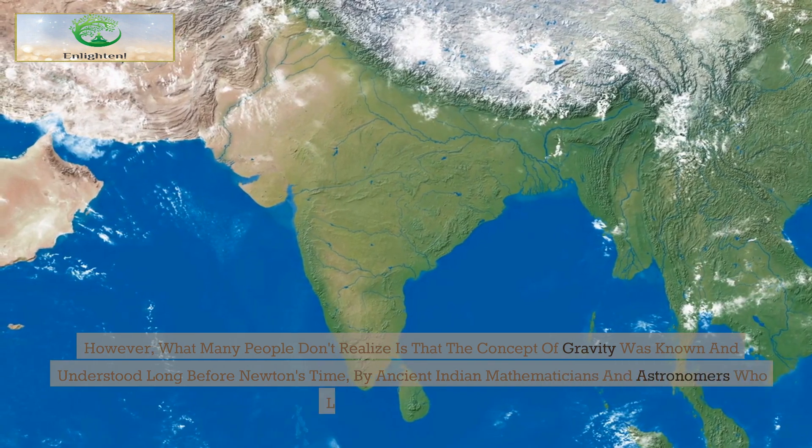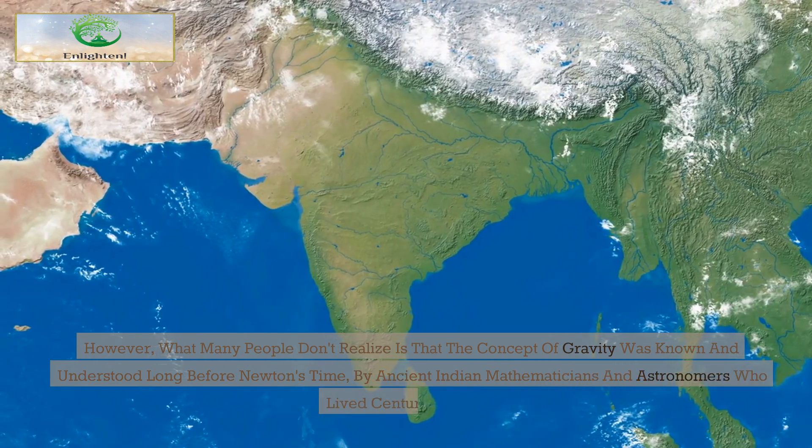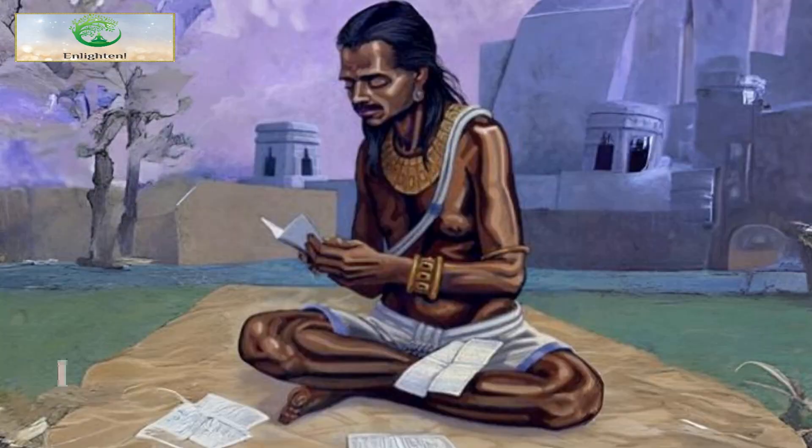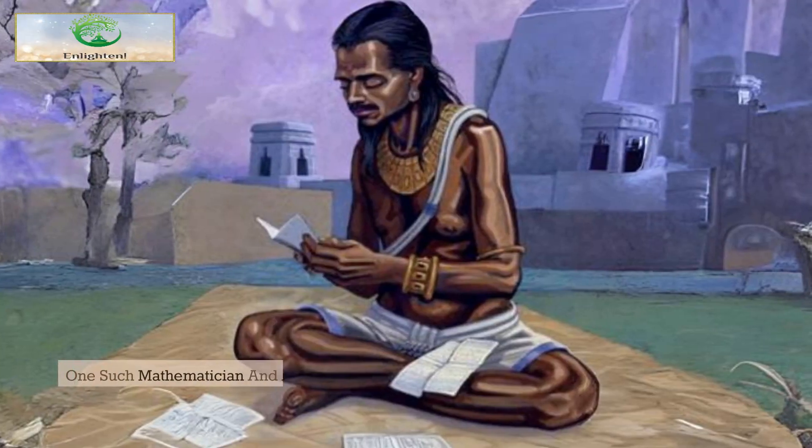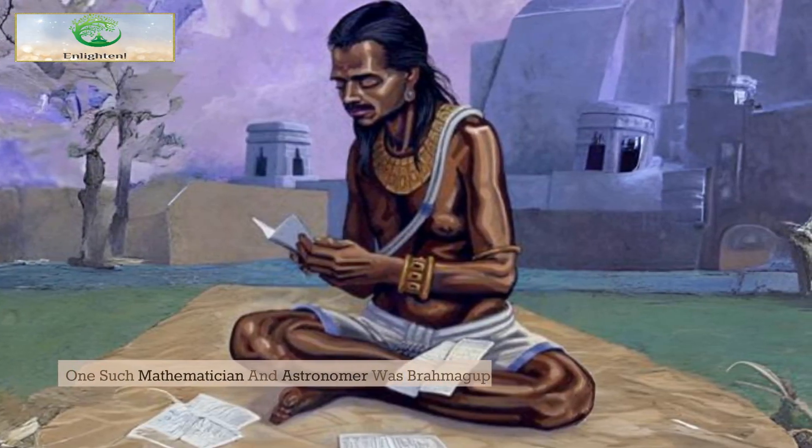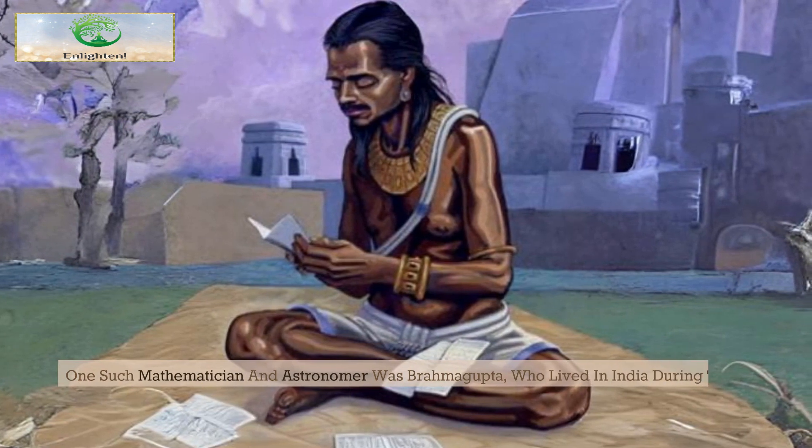Ancient Indian mathematicians and astronomers who lived centuries ago understood gravity. One such mathematician and astronomer was Brahmagupta, who lived in India during the 7th century CE.